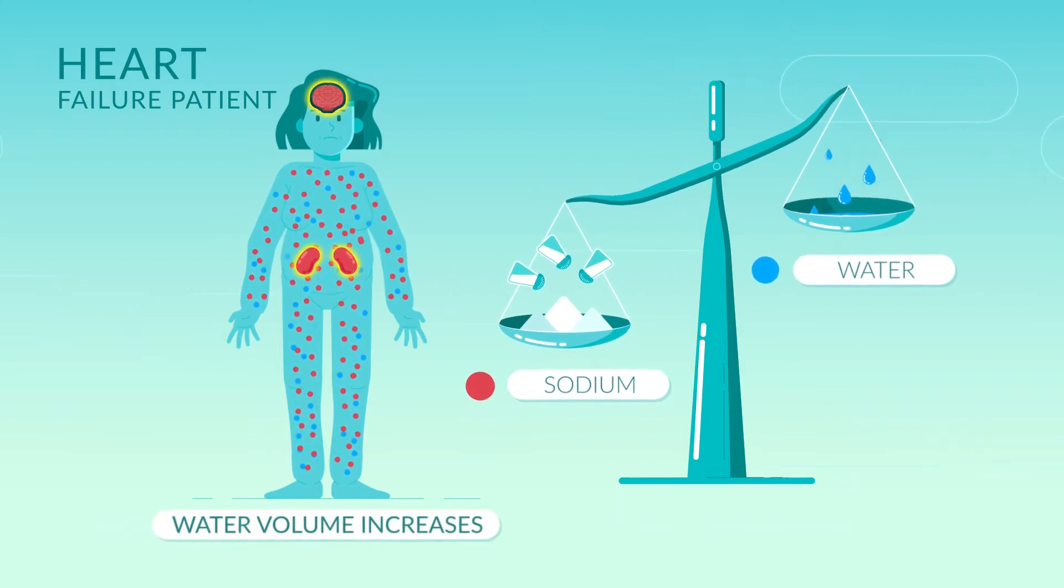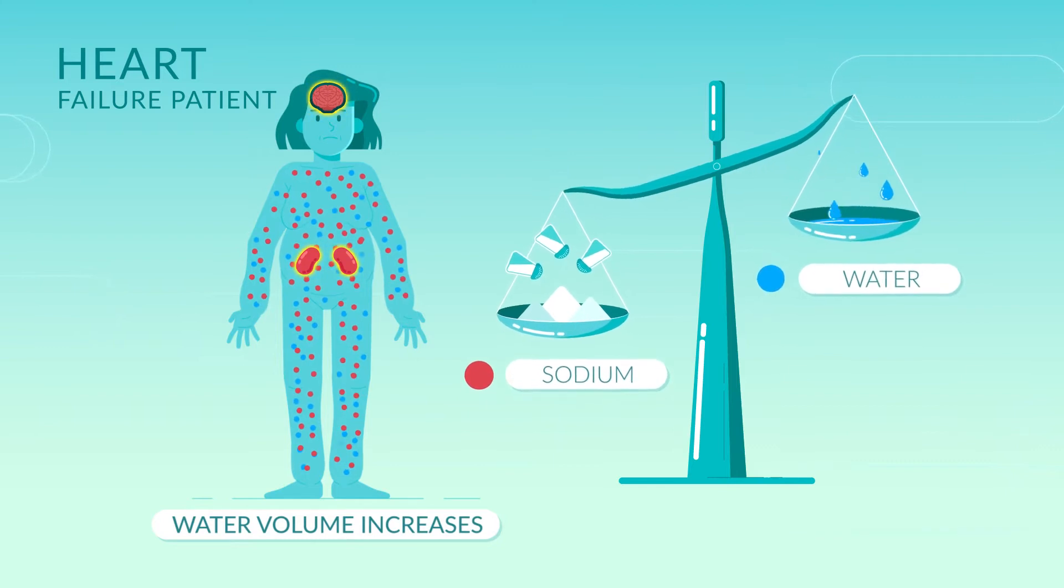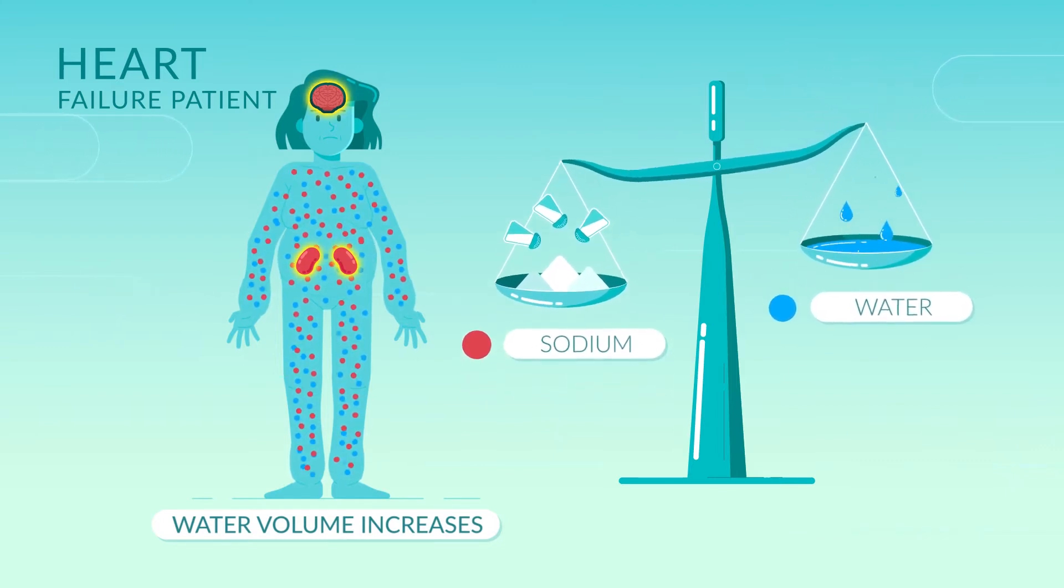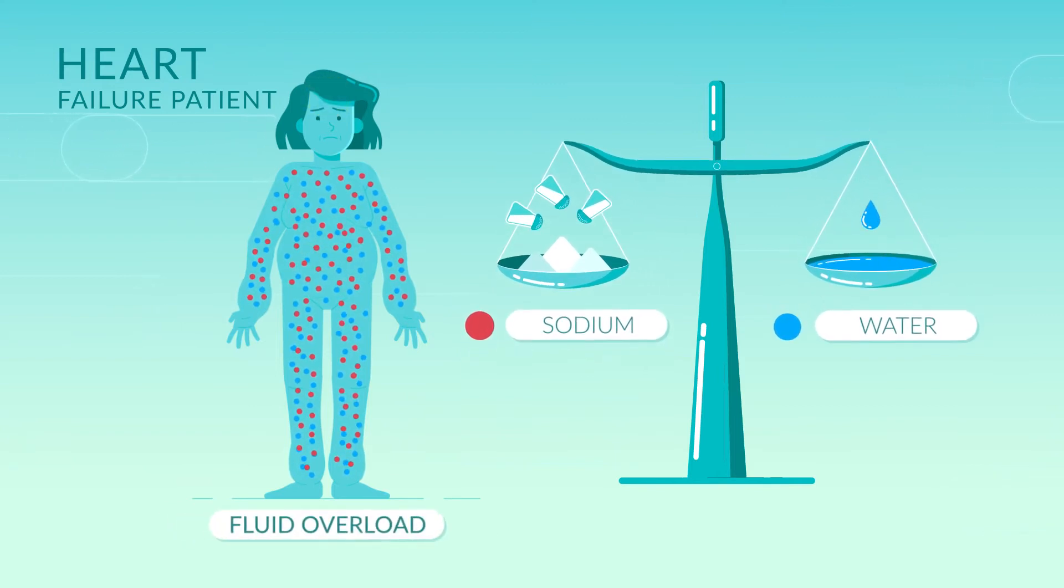So to prevent this, the brain and the kidneys respond quickly and accurately maintain the correct concentration by retaining extra water. This restores the correct concentration, but now the body has too much sodium and too much water.